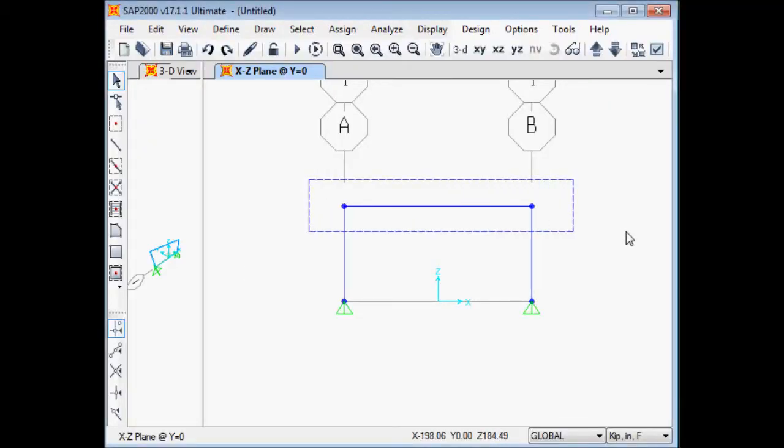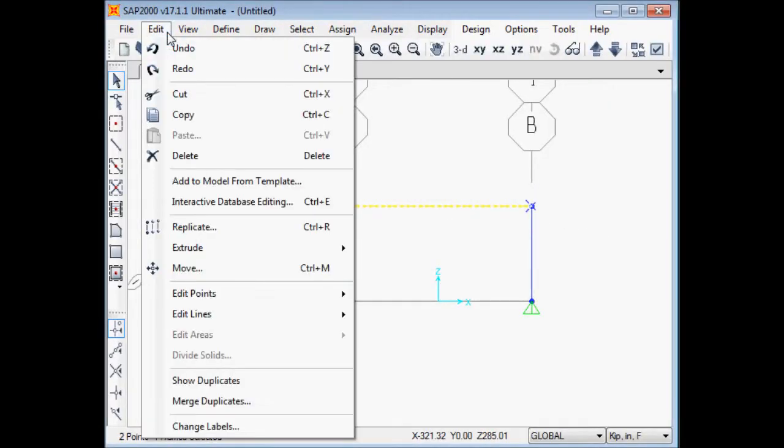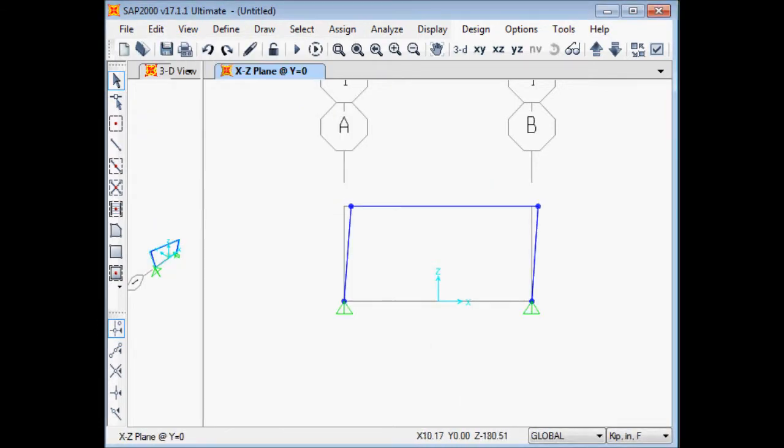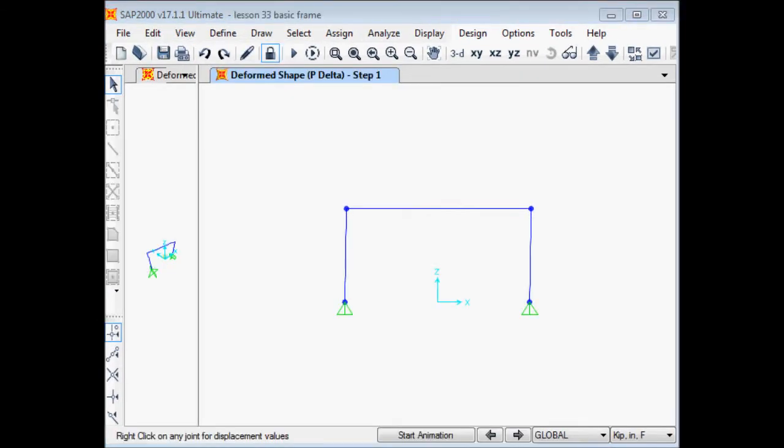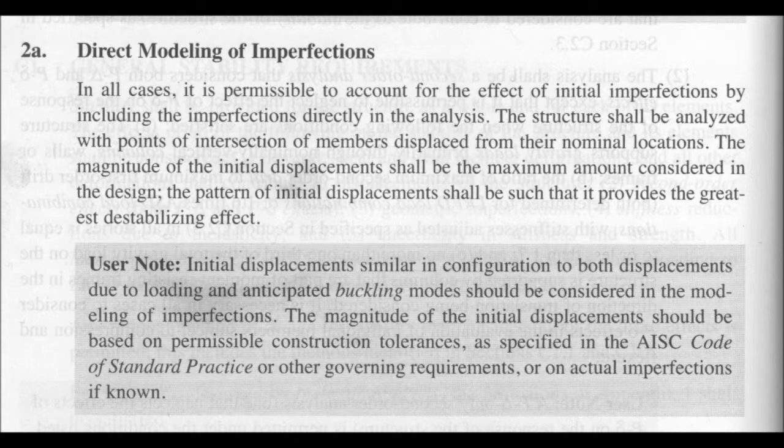If the analyst seeks to analyze side sway buckling, then the analyst actually puts in imperfections into the structural frame to move it into a side sway buckling mode. But a key point about AISC's recommendations in Section C of the specifications is that the initial displacements must be similar in configuration to the anticipated buckling modes.